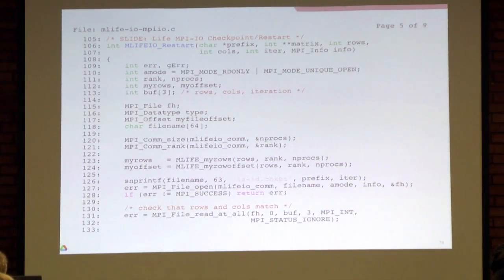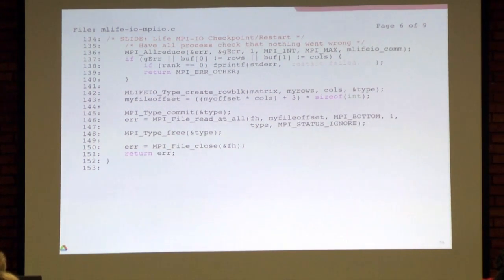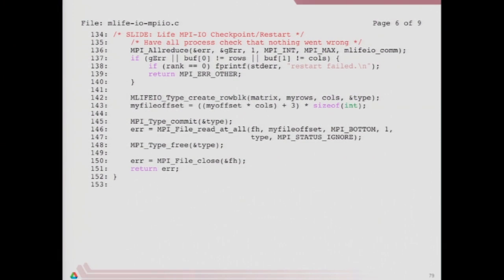The restart looks very similar — we're opening but this time reading only, and we're not trying to create the file. We call MPI_File_read_at_all on a small buffer of three integers. We then do an all-reduce to make sure everyone was able to read with no error, and that their rows and columns match what they expected. Then they create that row block, calculate their file offset, and read the data from the file in a second call.